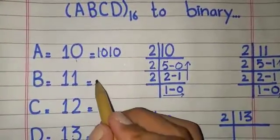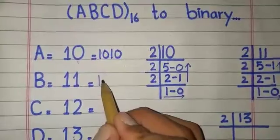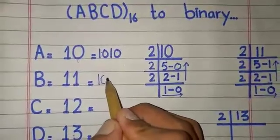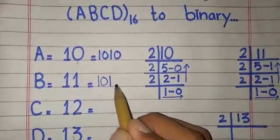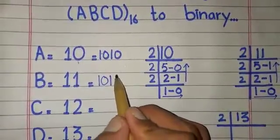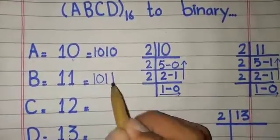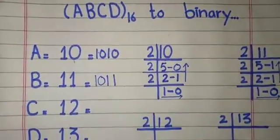11 is equal to 1, 0, 1, 1. So B equals 11, which in binary number system is 1011.